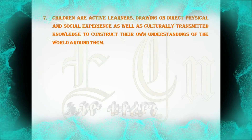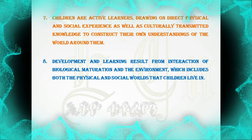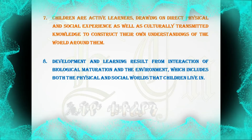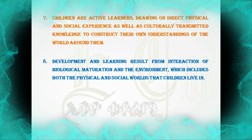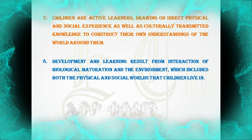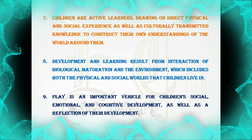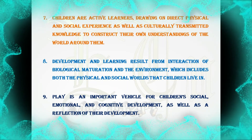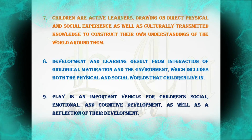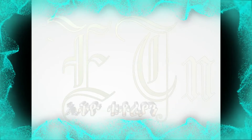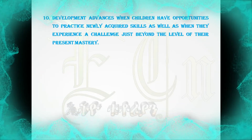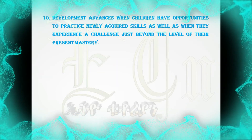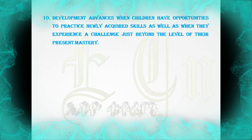Seven: Children are active learners, drawing on direct physical and social experience as well as culturally transmitted knowledge to construct their own understandings of the world around them. Eight: Development and learning result from the interaction of biological maturation and the environment, which includes both the physical and social worlds that children live in. Nine: Play is an important vehicle for children's social, emotional, and cognitive development as well as a reflection of their development. Ten: Development advances when children have opportunities to practice newly acquired skills as well as when they experience a challenge just beyond the level of their present mastery.